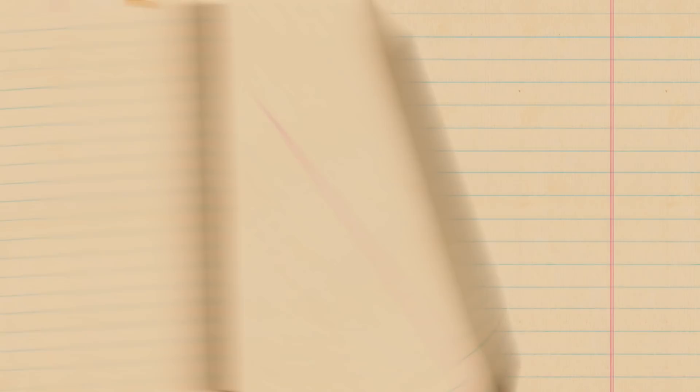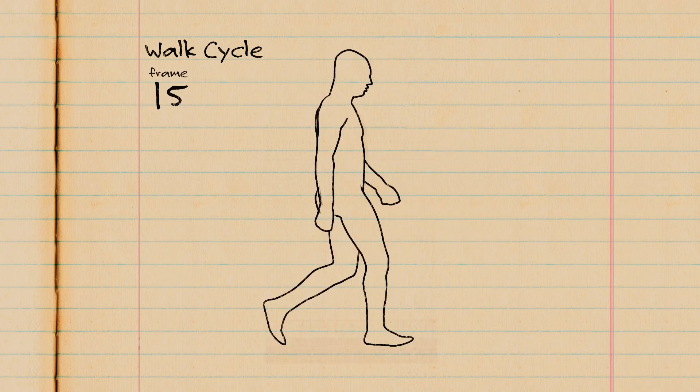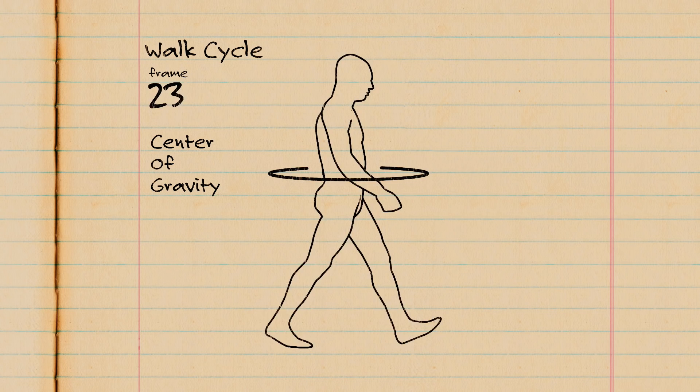Now if we turn our attention to our most basic form of locomotion, we start to see some patterns emerge. Starting with the center of gravity, from which all primary inertia originates, we will look at the up and down motion.